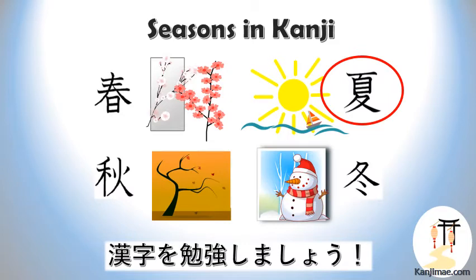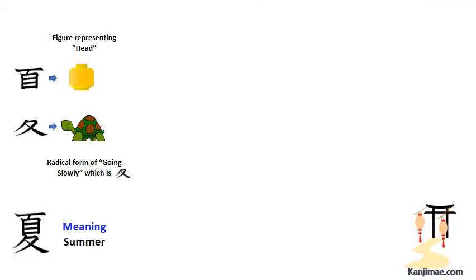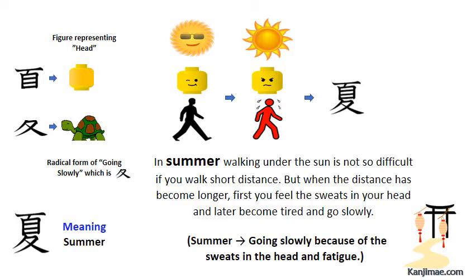Now the second kanji meaning summer. First we should know the two radicals used in this kanji, which also have widespread usages in forming several other kanji characters. The radical above represents a head-like part of our body — it looks like the head emoji. The radical below is used to indicate the action of going slowly. Together, the formed kanji looks like a walking head. In summer, walking under the sun is not so difficult for short distances, but for long distances it becomes tiring and you walk slowly. So this kanji figure may remind us of a slowly going head on a hot summer day.